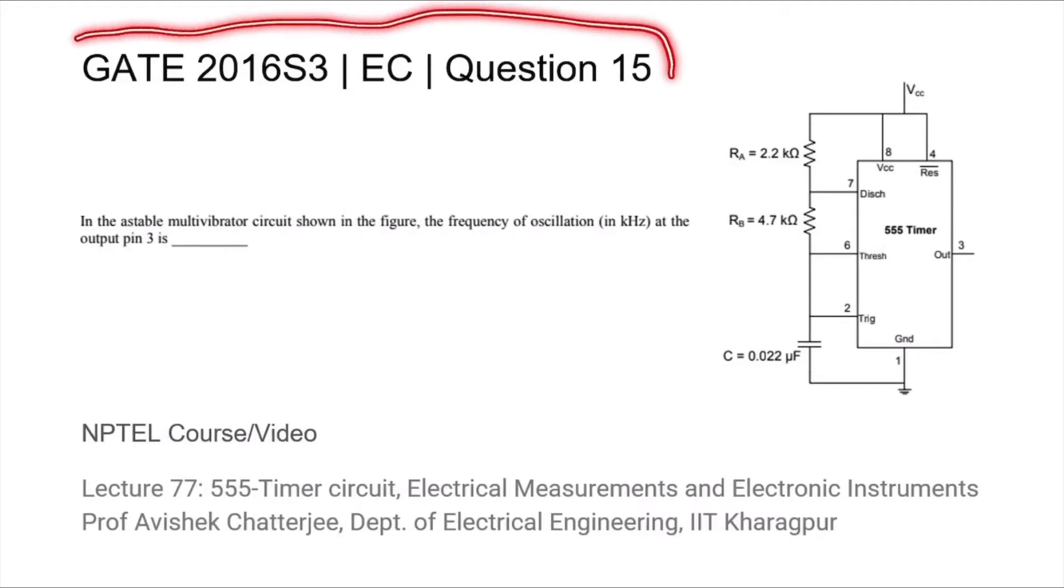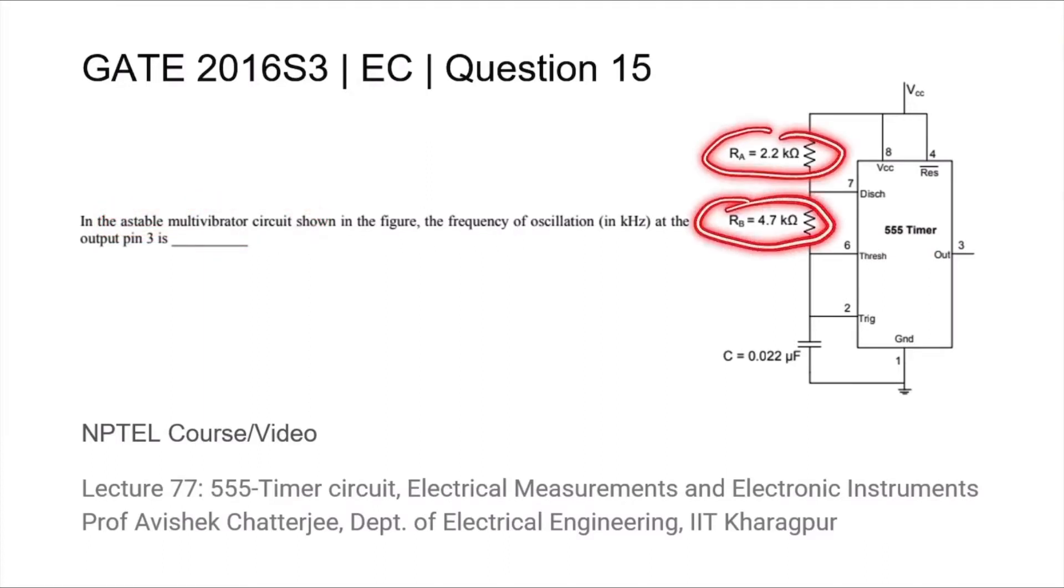This is Question 15 from the GATE 2016 Session 3 EC paper. We are given a 555 timer used as an astable multivibrator. Using the values of Ra, Rb, and C, we need to calculate the frequency of the square wave obtained at pin 3, the output pin.